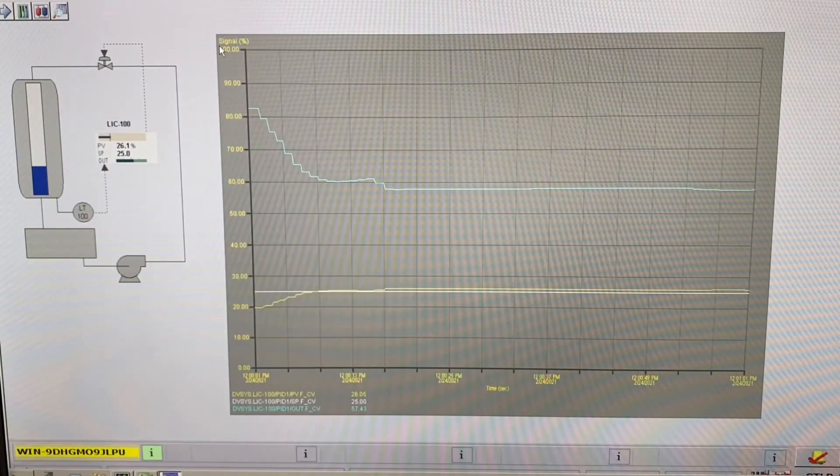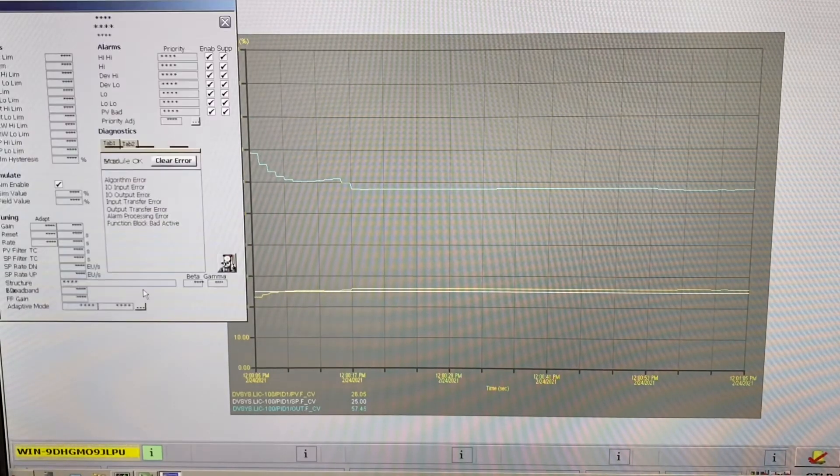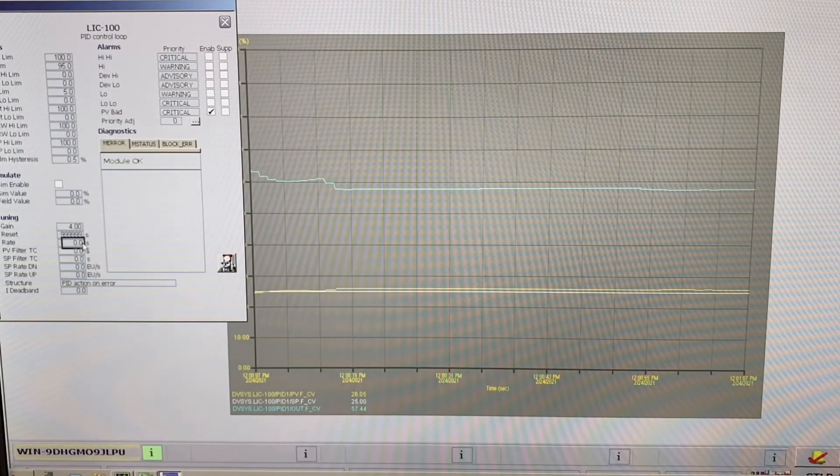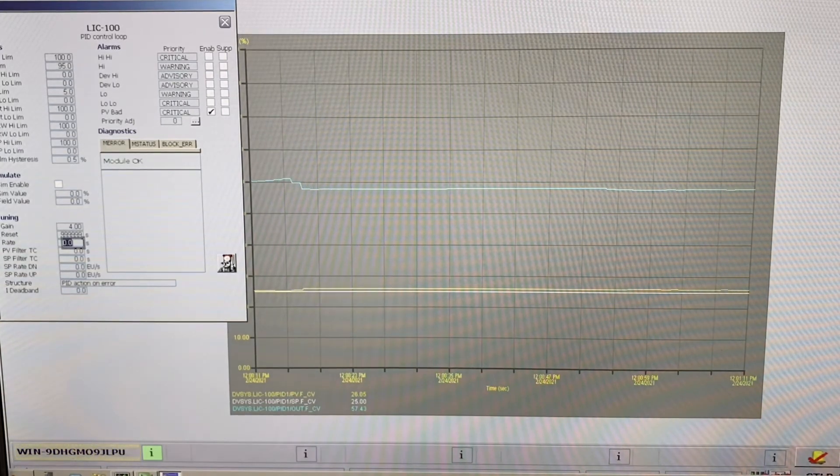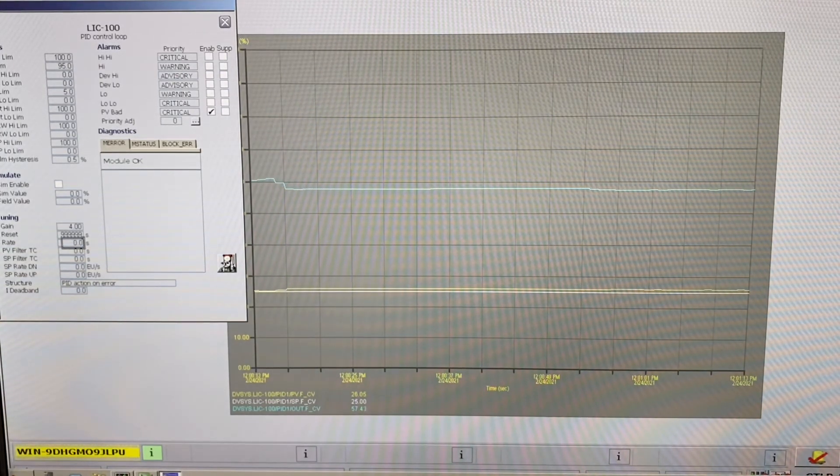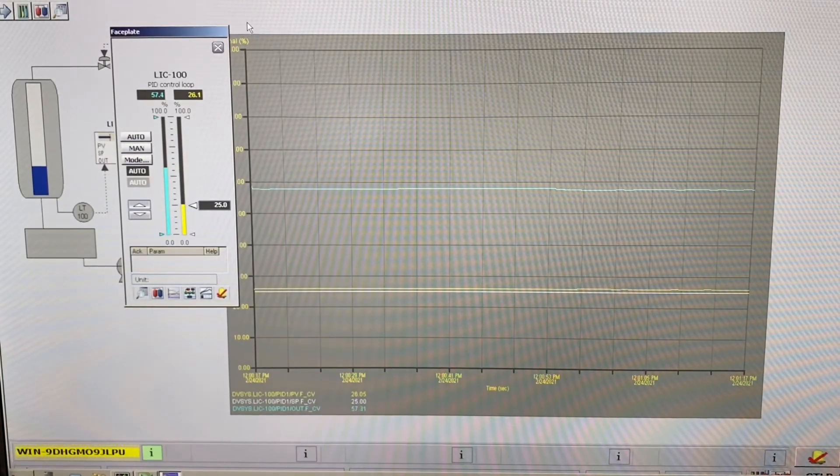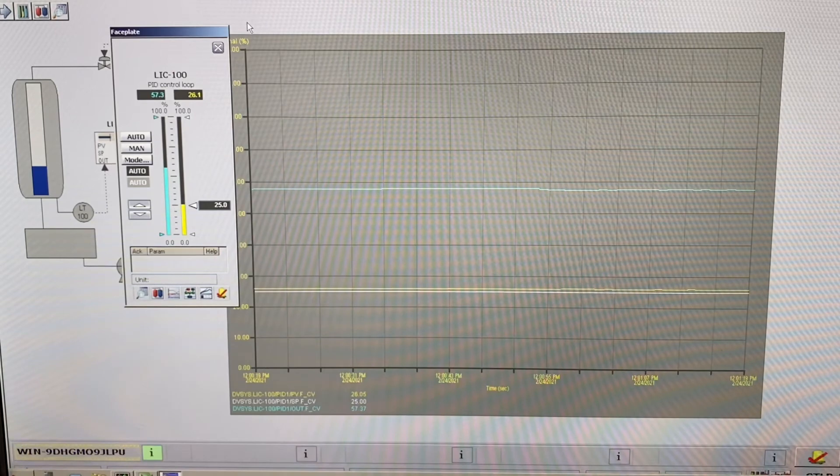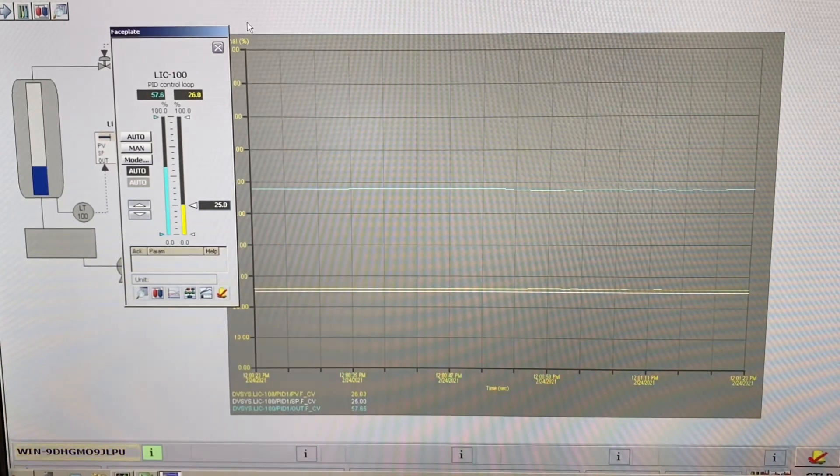So now we're going to go and do the same thing, but we're going to turn on derivative here. I'm going to give the derivative time here, I'm going to give it a time of, let's go with eight seconds. There, I've got it set up with the derivative time of eight seconds. So nothing changed here, nothing changed. It's because we don't have any changing error. So we need to go and open that valve on the bottom of the vessel.